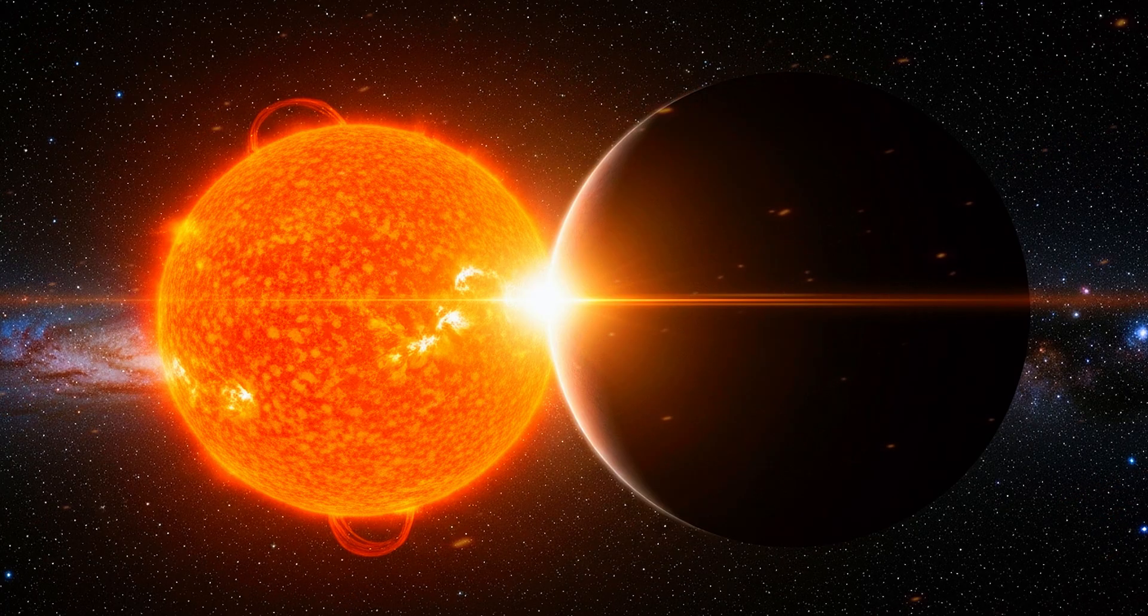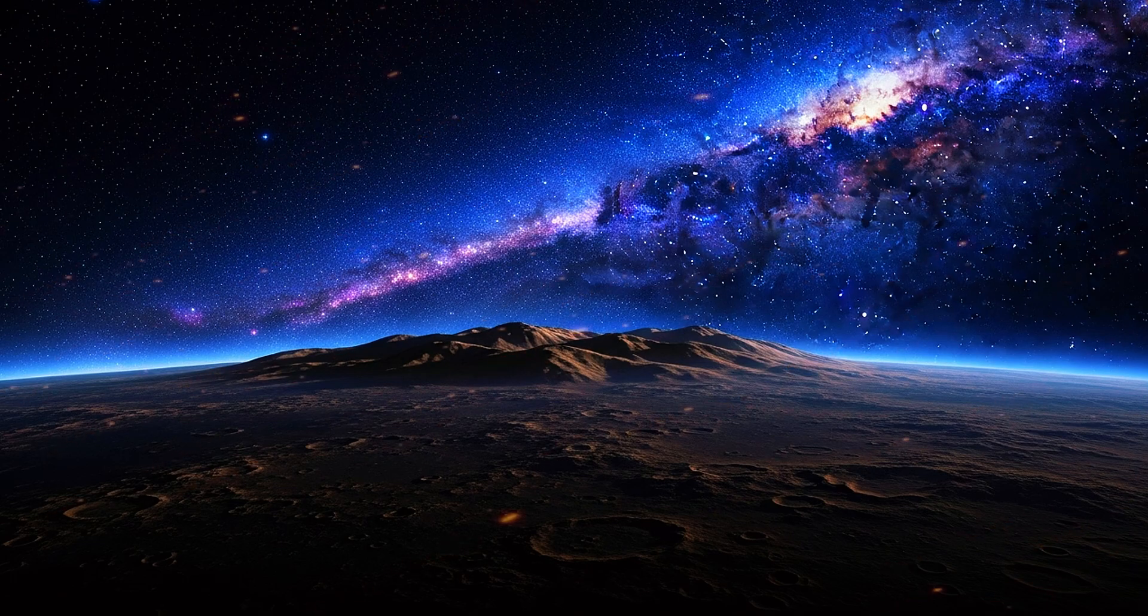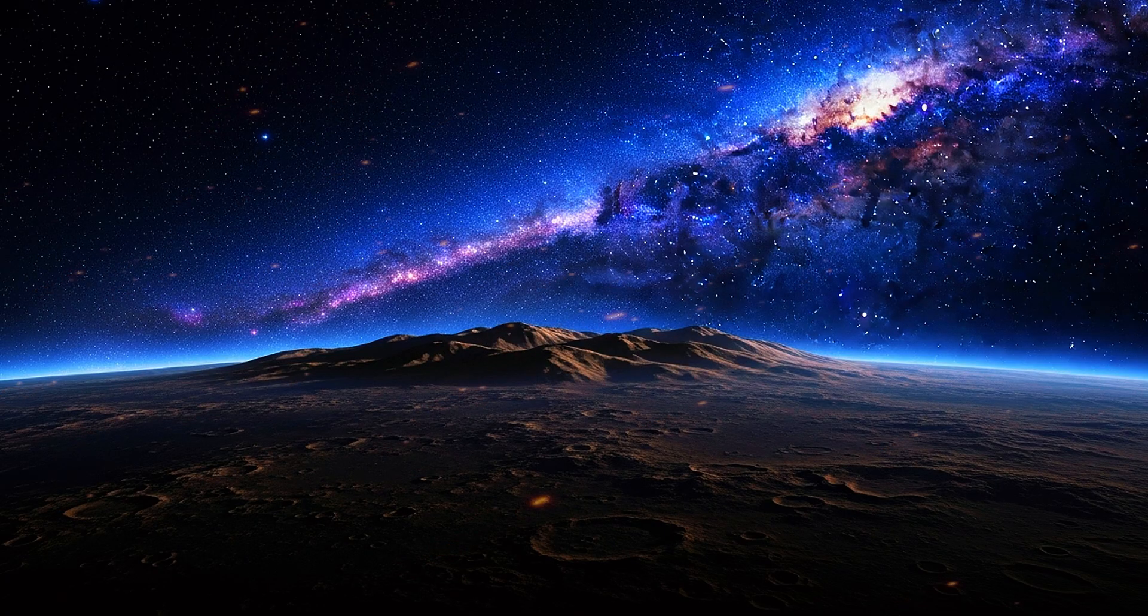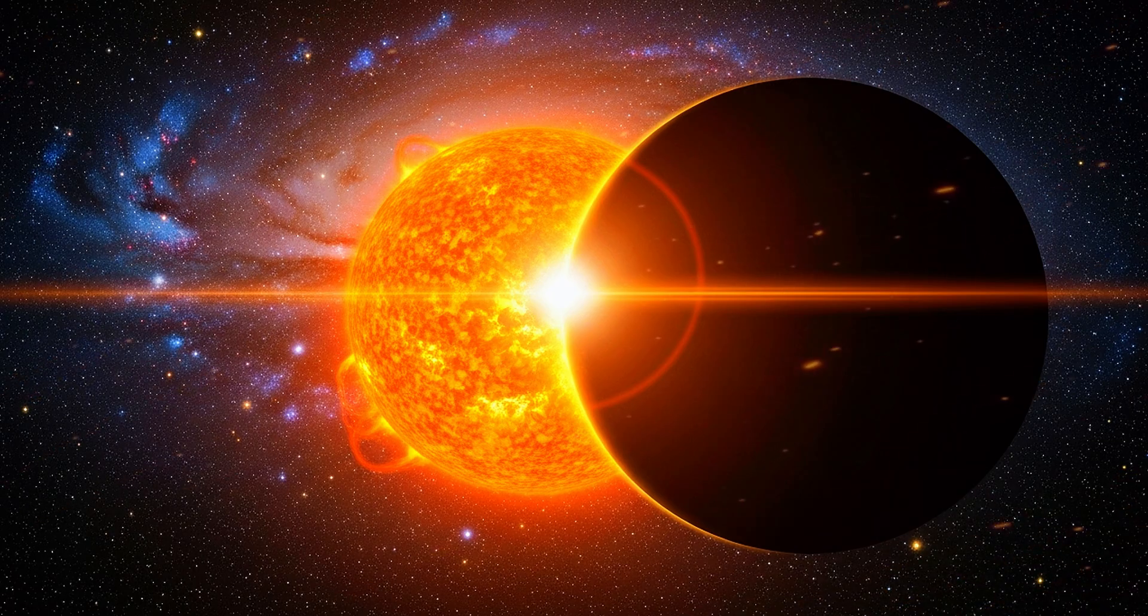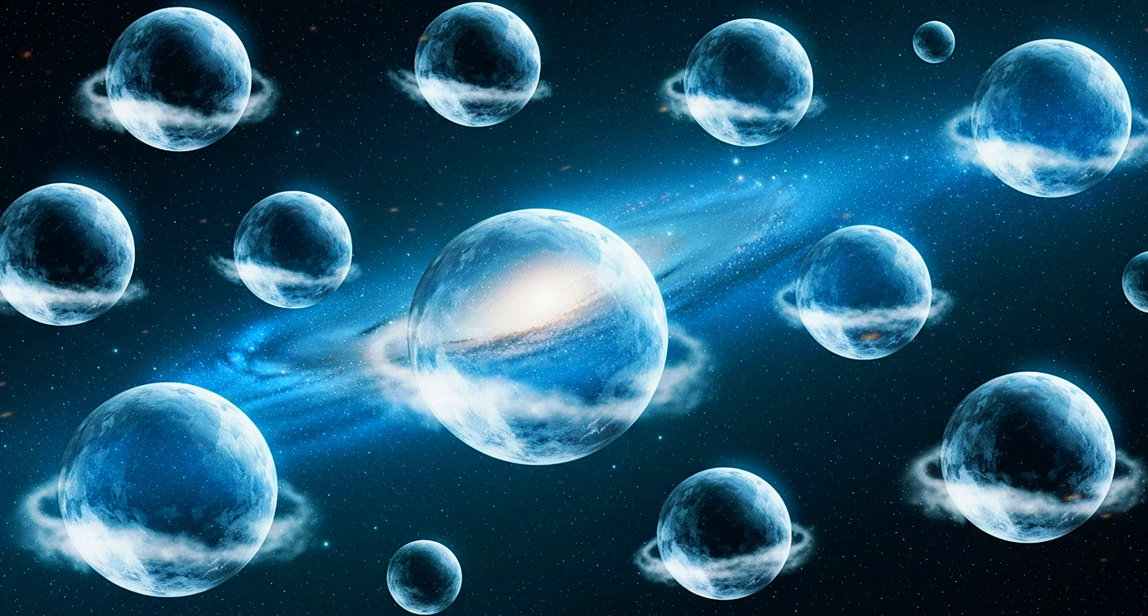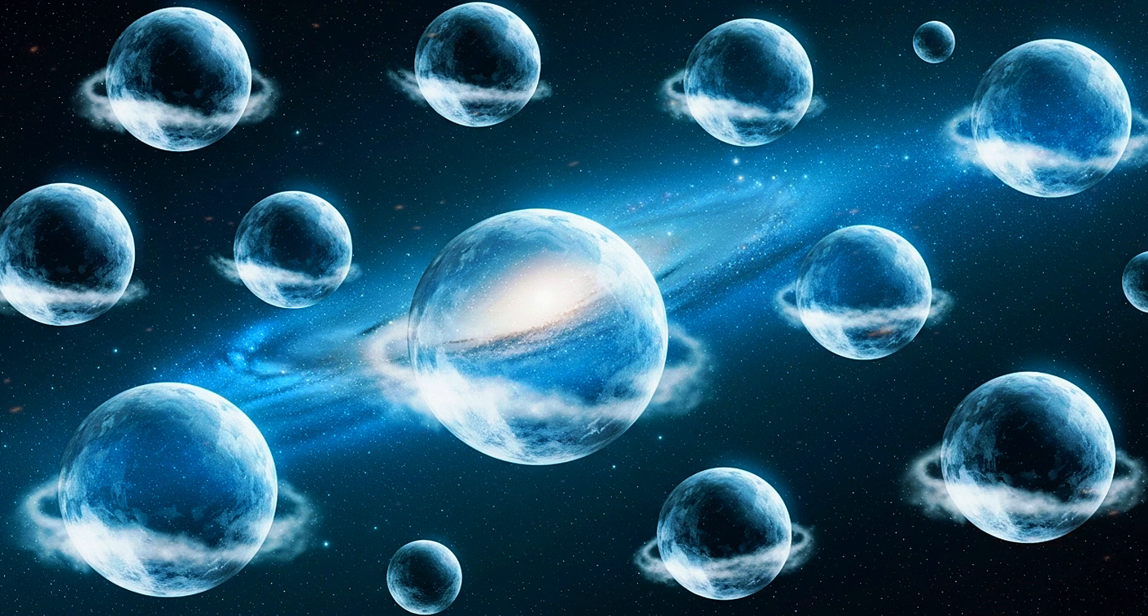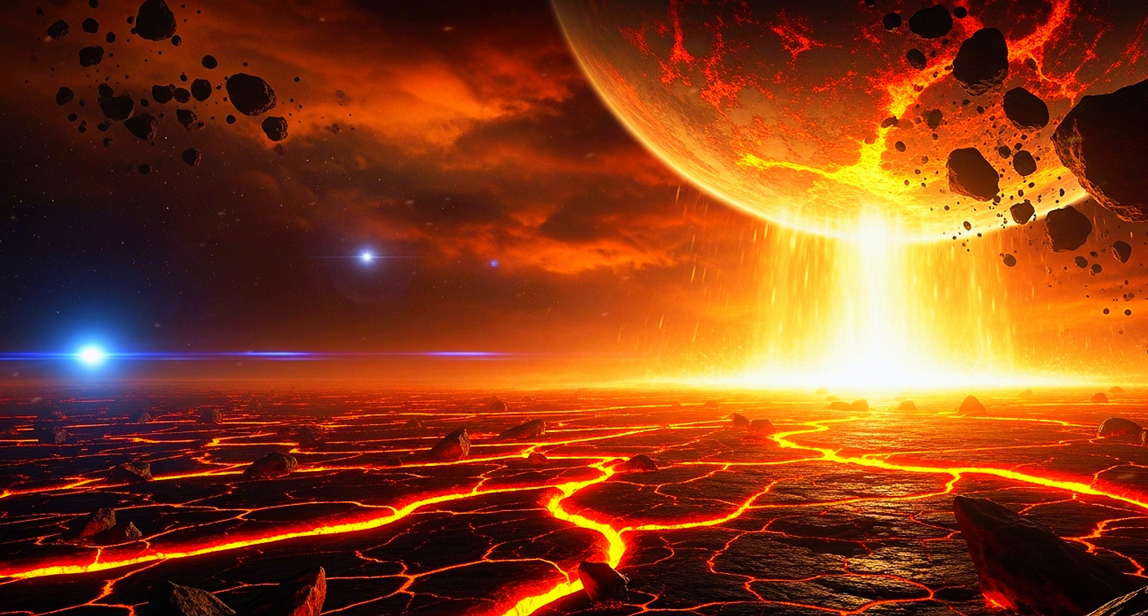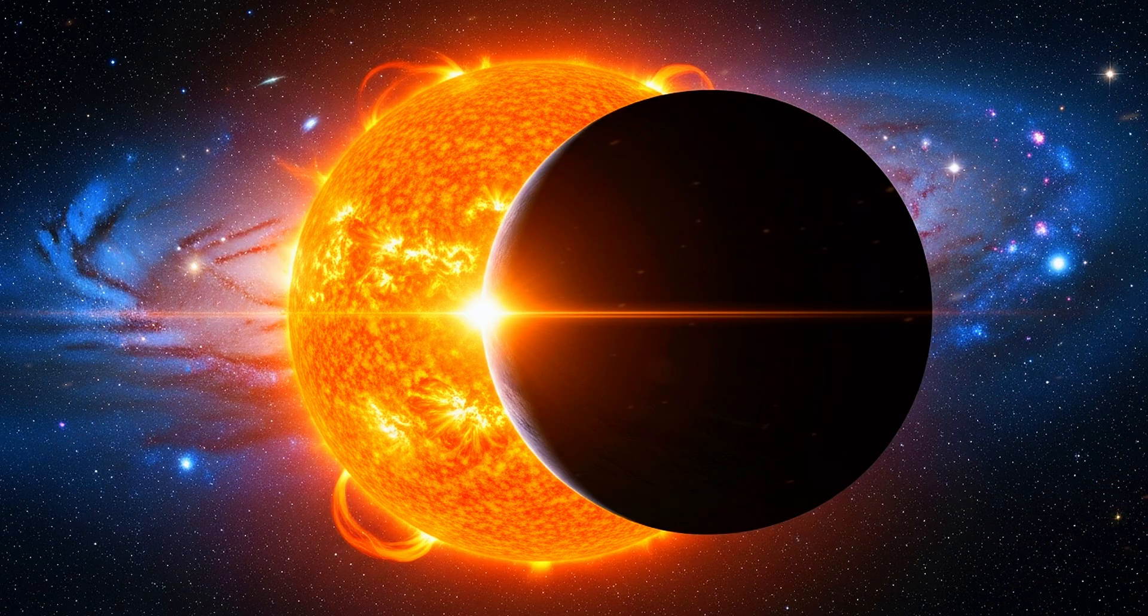So where does this leave us, here on the ground, under a sky that feels more alive than it has in a long time? It leaves us with a to-do list disguised as wonder. If you have binoculars, keep them handy for the weeks after the comet clears the sun. Learn the constellations near the ecliptic so you can judge a tail's angle by sight. Try long exposures even if you've never tried astrophotography. Modern phones and a tripod can pull shocking detail out of a faint coma. And if you can't see it at all where you live, let the imagination do what it's always done. Put yourself out there at the edge of the coma, in that dusty plasma bubble where solar photons are a wind and the nickel-rich grains are glitter tumbling down an invisible river.